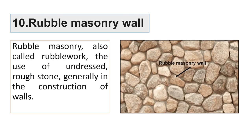The tenth type is rubble masonry walls. In rubble masonry, stones of different sizes are used — these are undressed rough stones — and these are mostly used to make the outer boundary of a site, typically in older houses.